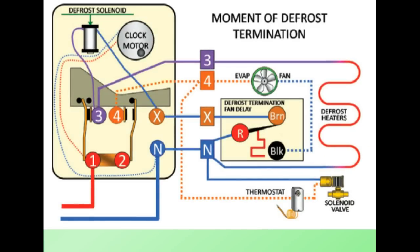Let's take a look at what's happening here. 115 volts is passed through this closed contact up to the defrost solenoid.